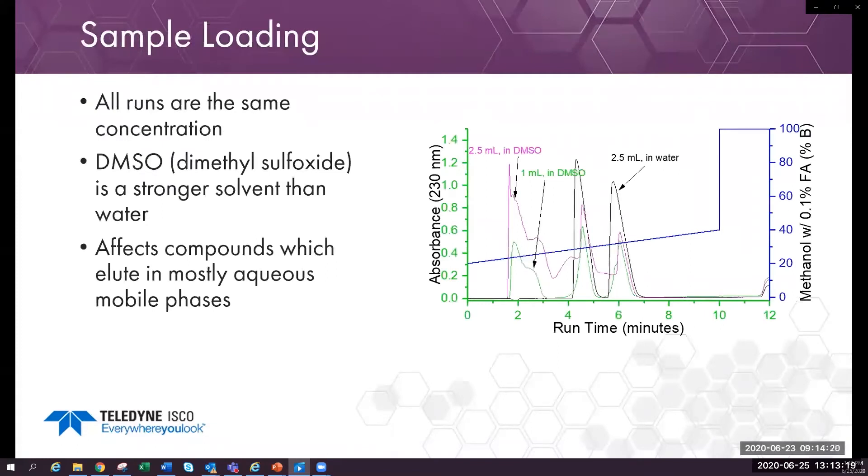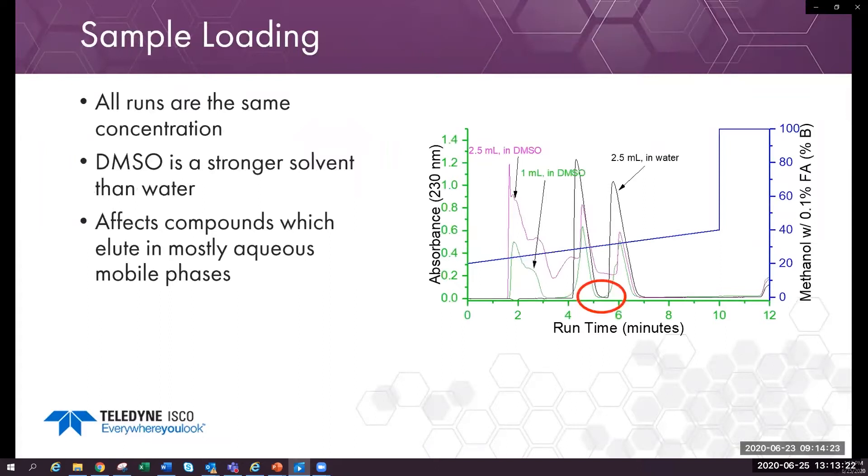We'll do sample loading first. The first injection, the green trace, was a one mil injection of a sample dissolved in DMSO. It has baseline resolution.